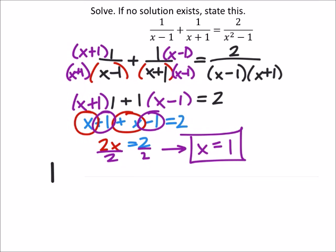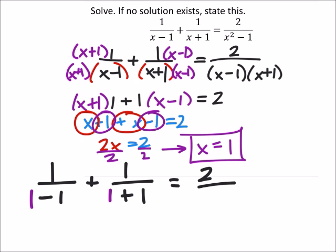So in that first fraction, I got 1 over 1 minus 1. I'm going to fill the rest of this out, even though some of you guys don't really need it. 1 plus 1, and this equals 2 over 1 squared minus 1. Well, right here, 1 minus 1 is 0. 1 divided by 0 is an undefined value.